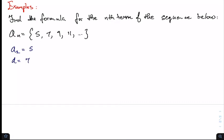Once we have those two pieces of information we may write down our formula: a sub n is equal to a sub 1 plus n minus 1 times d. And here we fill in the blanks: a sub 1 is equal to 5 plus n minus 1 times 2.